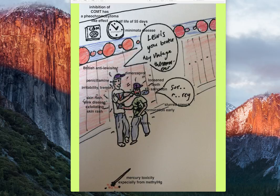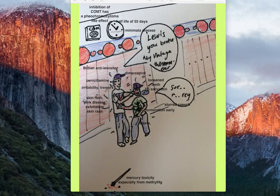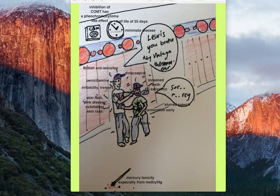To recap: pheochromocytoma was mentioned, and the clock also reminds us that COMT is inactivated by methyl mercury. Also important is Minamata disease — Minamata was a town in Japan poisoned by a company dumping mercury waste into their water, which bioaccumulated and caused a serious ongoing human and environmental disaster. I've drawn 'Minamata' on the clock because the name sounds like a Japanese watch brand, linking it to mercury toxicity.